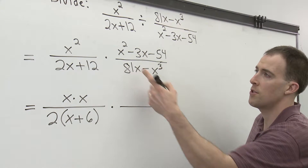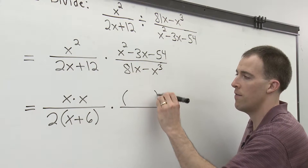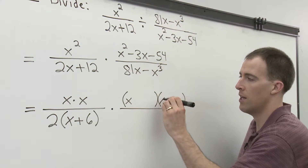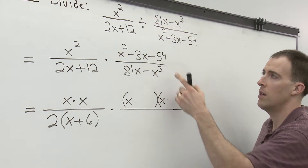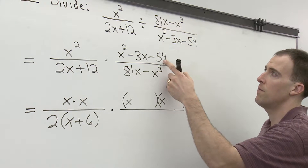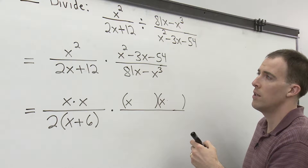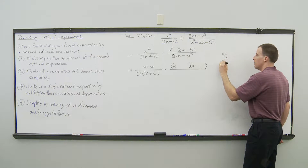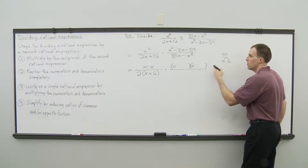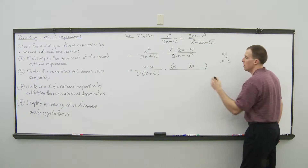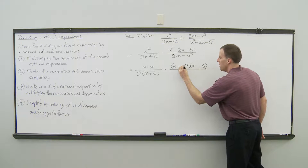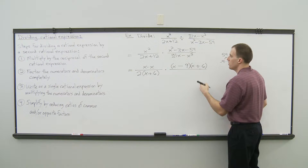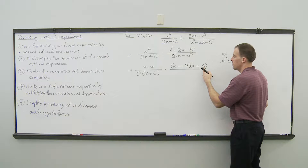For the second numerator, it's a trinomial, so we'll try to factor it into two sets of parentheses. What times what is x squared? That's x times x. We need two numbers that multiply to negative 54 and add up to negative 3. For 54, 9 times 6 works. Making it negative 9 and positive 6 gives us positive 6x and negative 9x, which adds up to negative 3x, and negative 9 times positive 6 is negative 54.